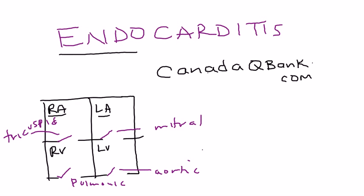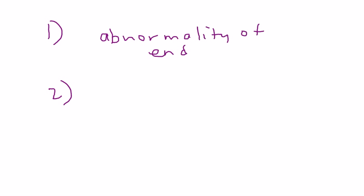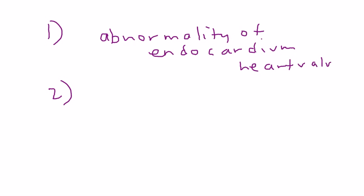There are two factors that you need to have endocarditis. The first one is some sort of abnormality of the endocardium. The endocardium is referring to the muscle of the heart, and what type of abnormalities? Well, really what we're talking about is abnormalities involving the heart valves.